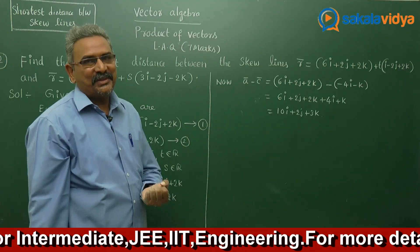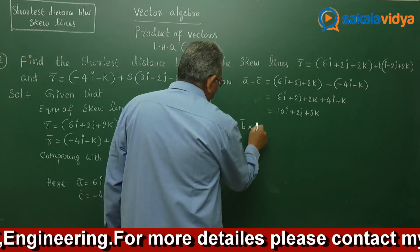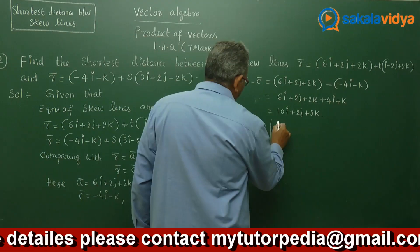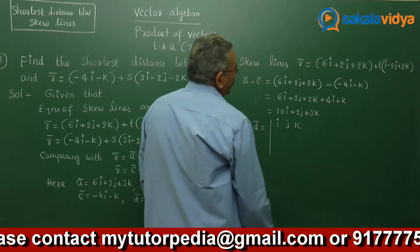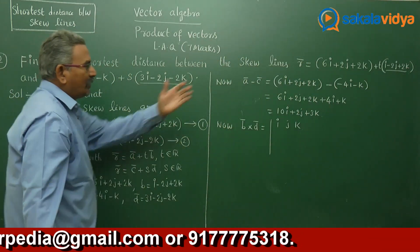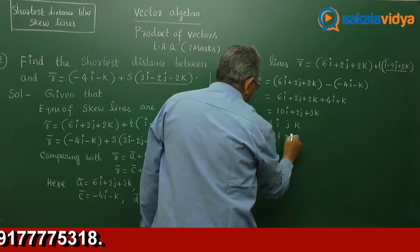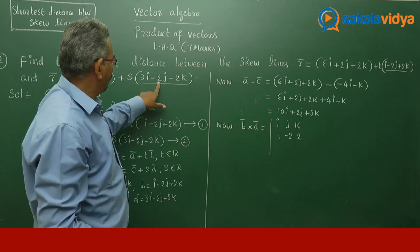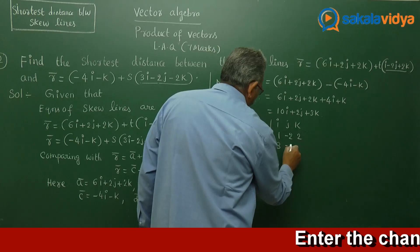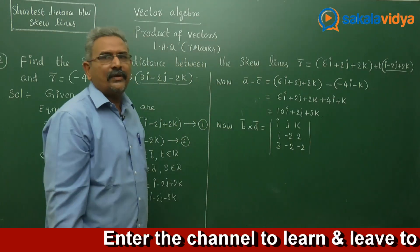Now we need to find b cross d. As per the definition of the cross product between two vectors, we set up the determinant with i, j, k in the first row. The components of b are 1, minus 2, 2, and the components of d are 3, minus 2, minus 2. We need to find the determinant of this matrix.